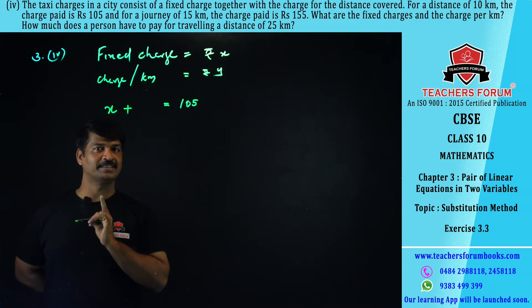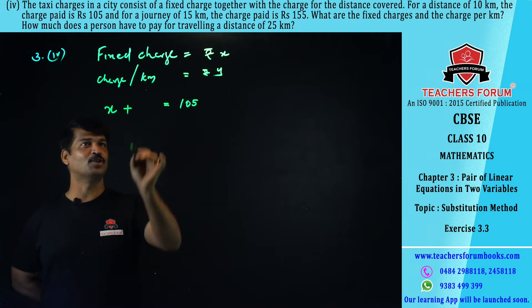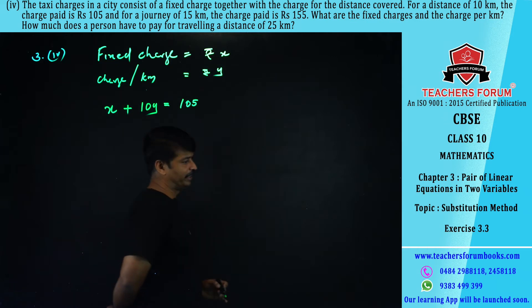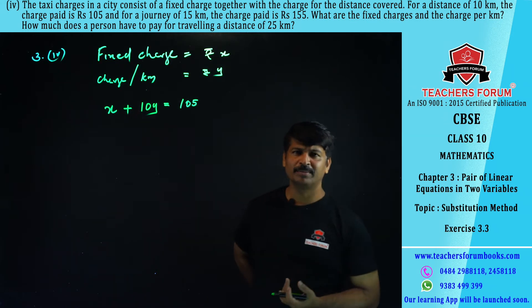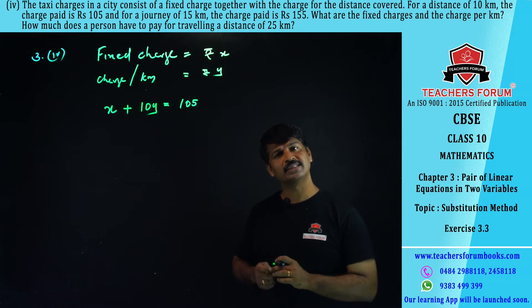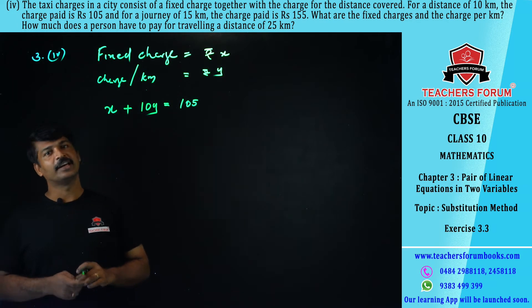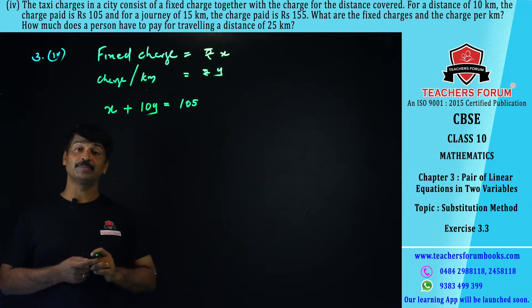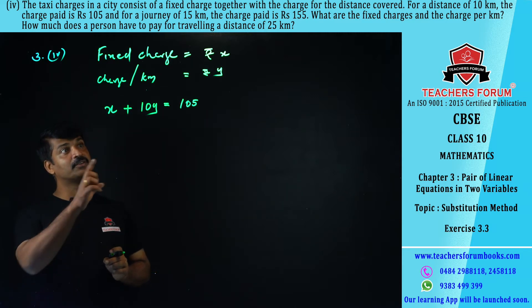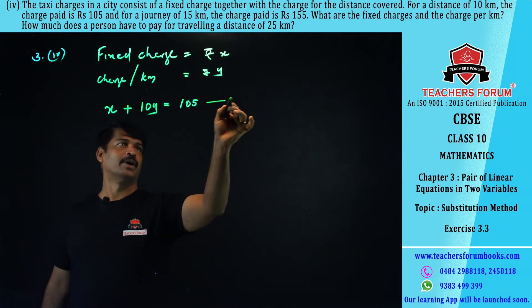For 10 kilometers you pay 10y. So the fixed charge x plus 10y equals 105. That is: x + 10y = 105. This is equation number one.